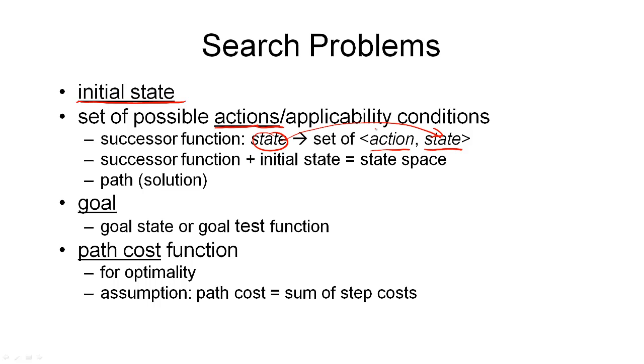Together, the successor function and the initial state span a state space which corresponds roughly to the state transition graph we have seen earlier. The state space is a directed graph with states as nodes and actions as labels on arcs.